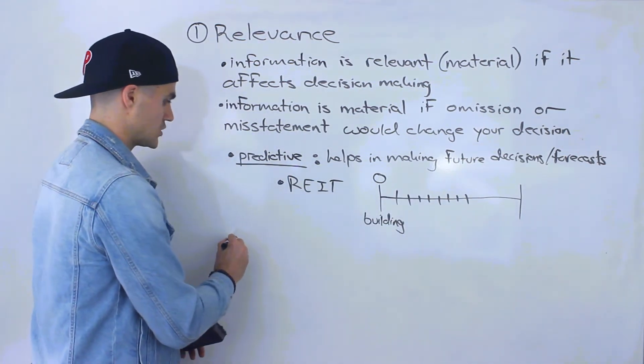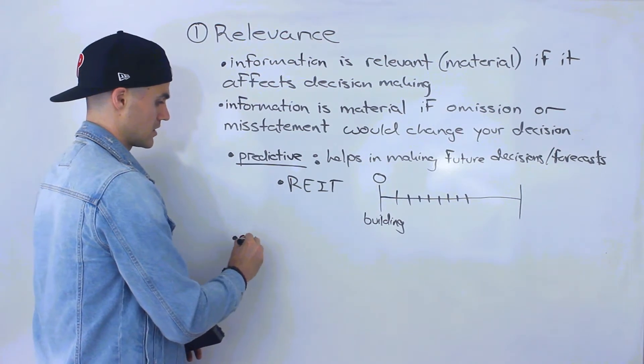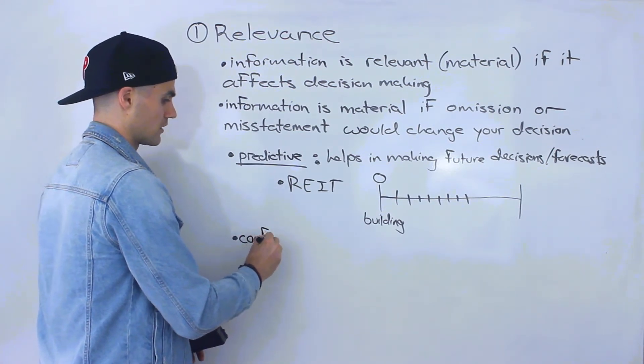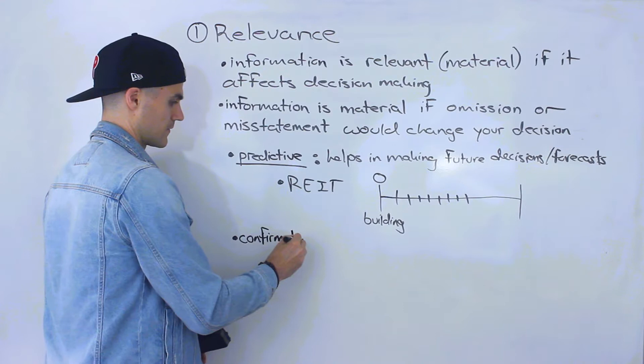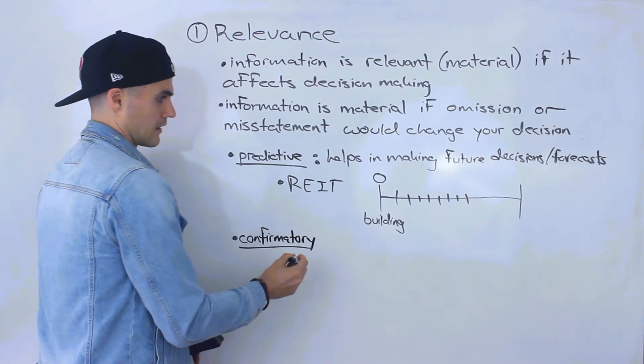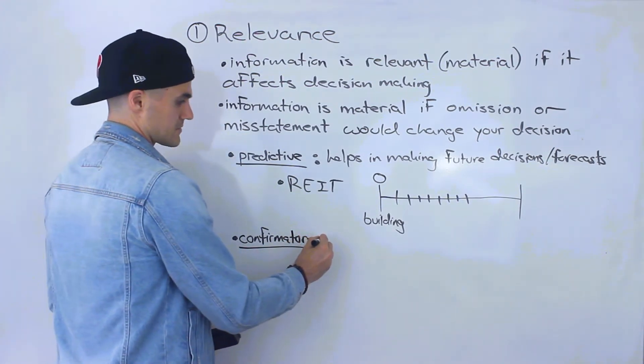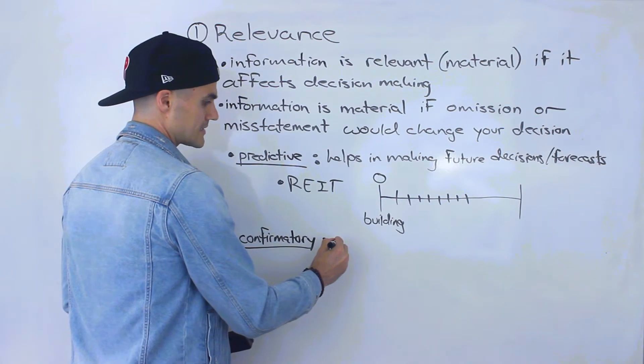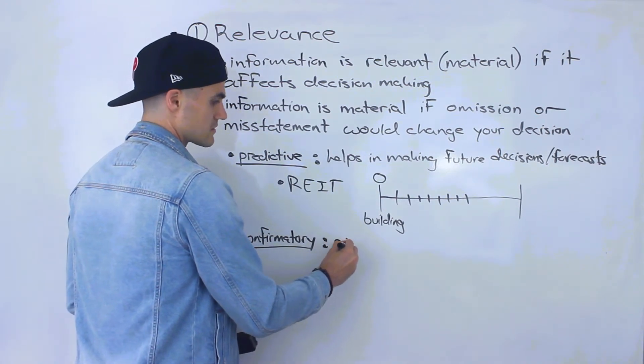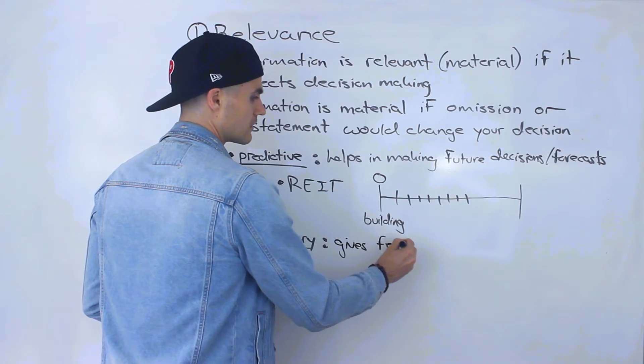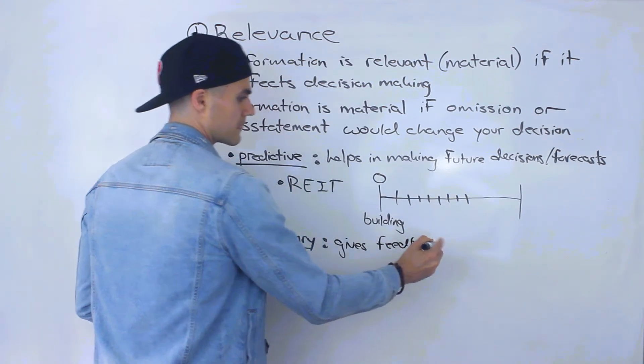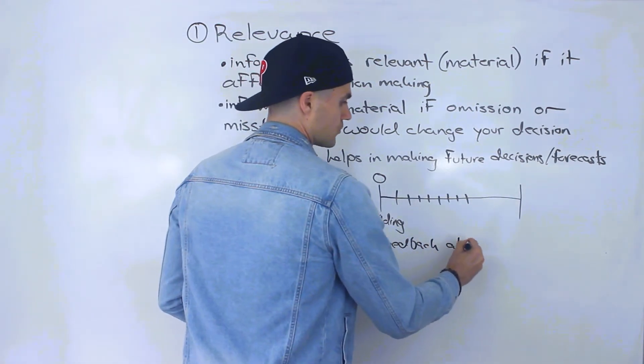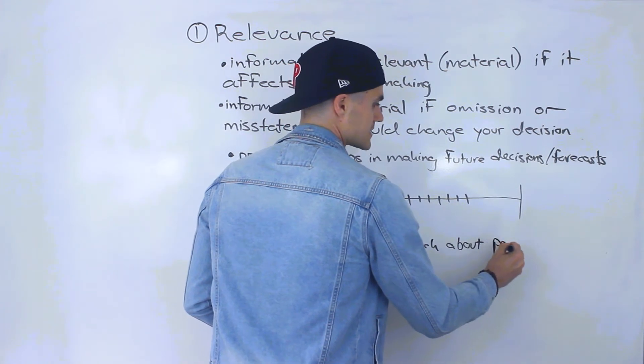Now, the information also has to be confirmatory. And what this means is it's information that gives feedback about past decisions.